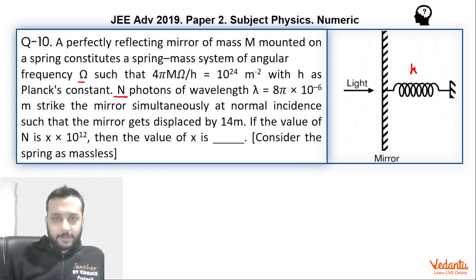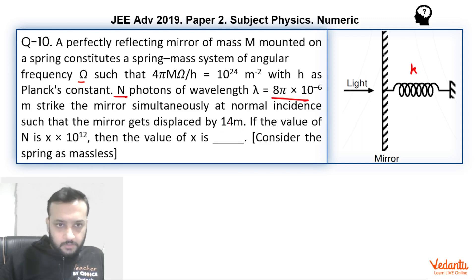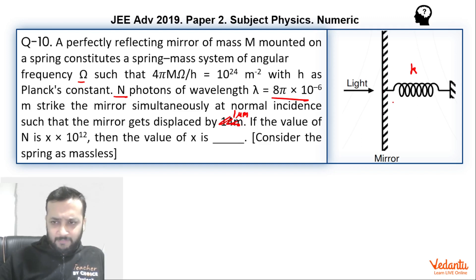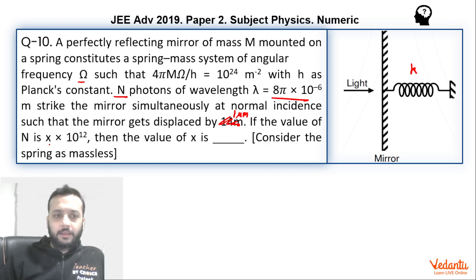The number of photons is capital N and the wavelength of each photon is 8π × 10⁻⁶. IIT had given the amplitude of oscillation as 1 micrometer, meaning when the photons strike this mirror it will have a maximum compression of 1 micrometer. We have to find the value of N if N is represented as x × 10¹², so we need to find the value of x.